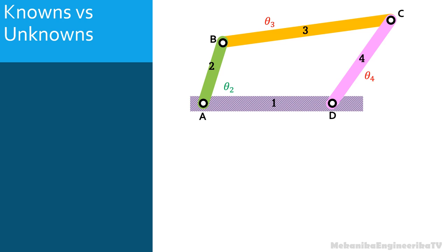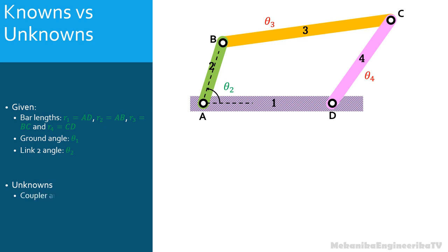For the position problem of the 4-bar mechanism, we first assume that the bar lengths are given. The angle of the ground bar should also be given. As mobility is equal to 1, we will have 1 degree of freedom controlled by an external source of energy. We will assume that the angle of the second bar, or bar AB, is given. Thus, the unknowns are the angle of bar BC (the coupler bar) and the angle of bar CD (link 4). We are going to establish expressions of the angles θ3 and θ4 in terms of R1, R2, R3, R4, θ1, and θ2.